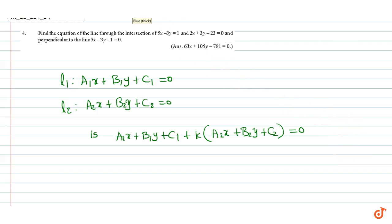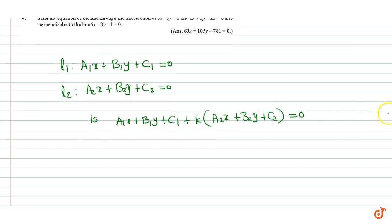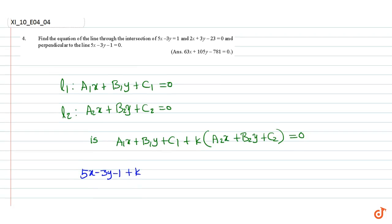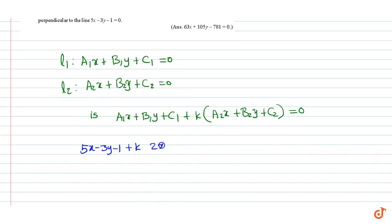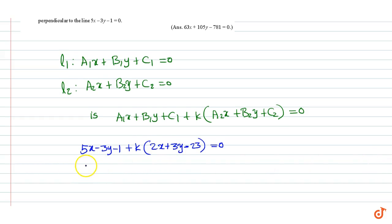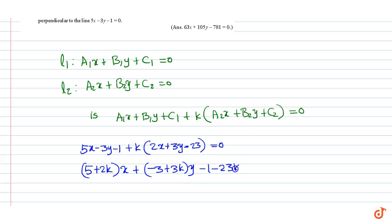Using this formula, the equation of the line through the point of intersection of these two lines is 5x minus 3y minus 1 plus K into 2x plus 3y minus 23 equal to 0. That is, (5 plus 2k)x plus (minus 3 plus 3k)y minus 1 minus 23k equal to 0.